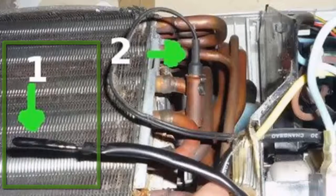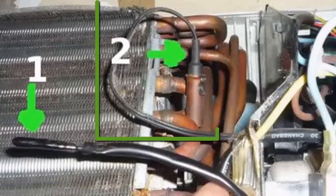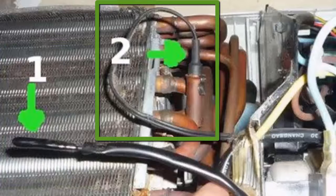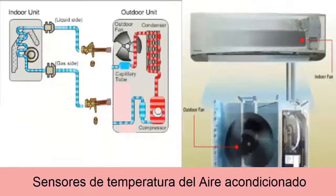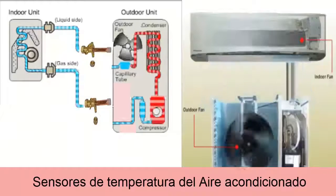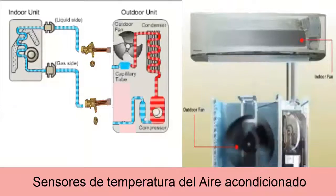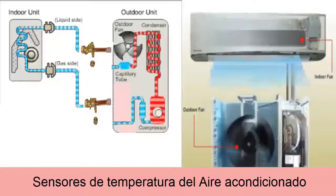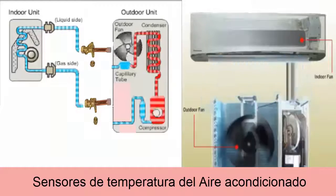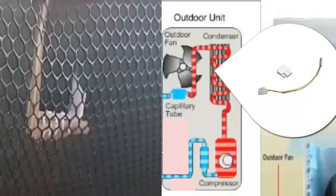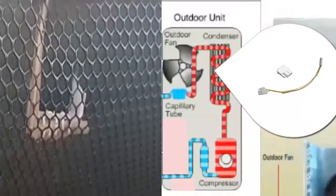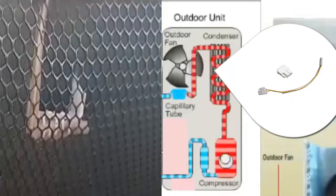2. The Evaporator Sensor, which measures the direct temperature of the evaporator to determine if there is freezing. However, nowadays, additional sensors have been introduced into some equipment to improve control and therefore the performance of the unit, such as the Condenser Temperature Sensor, which measures the temperature of the air passing through the condenser.